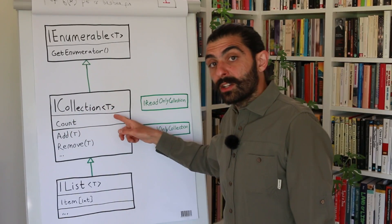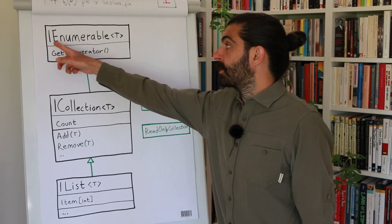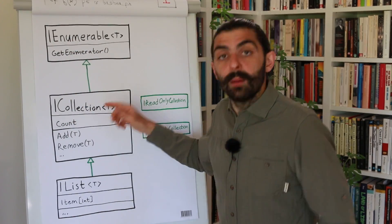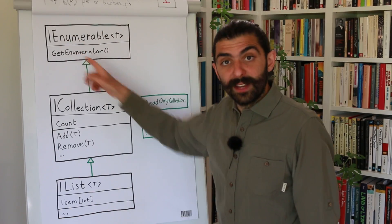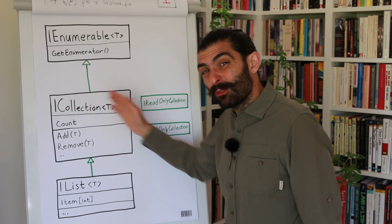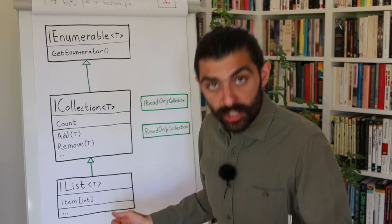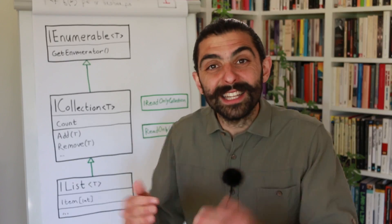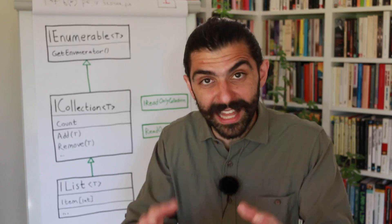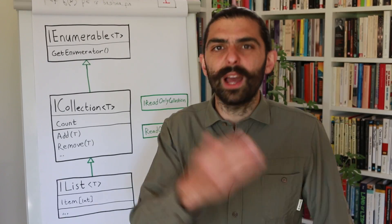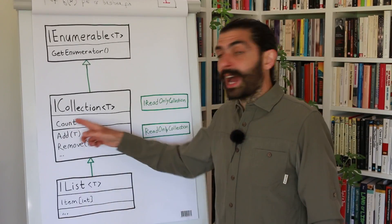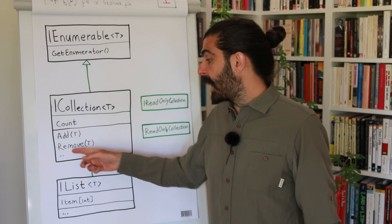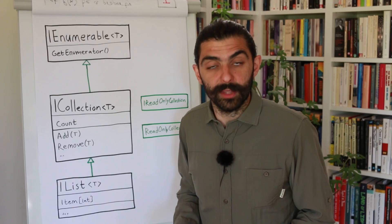Since ICollection inherits from IEnumerable, any class that implements ICollection must also implement IEnumerable. But ICollection adds a bunch of members — a few key ones are Count, Add, and Remove. We said that now we're talking about a finite collection that you can add items to and remove items from. Count gives us the number of elements in the collection, Add adds an item, and Remove removes an item.